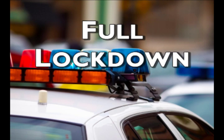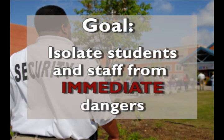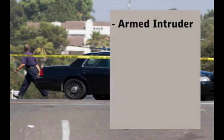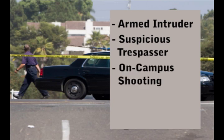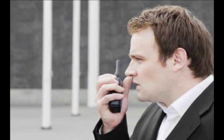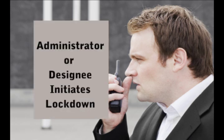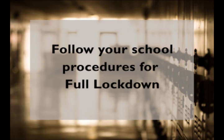A full lockdown is initiated to isolate students and staff from immediate dangers. These dangers may include armed intruders, suspicious trespassers, on-campus shootings, bomb threats, snipers, or other threats of violence. An administrator or designee will initiate a full lockdown. Once the alert is issued, follow your school's specific procedure for a full lockdown.